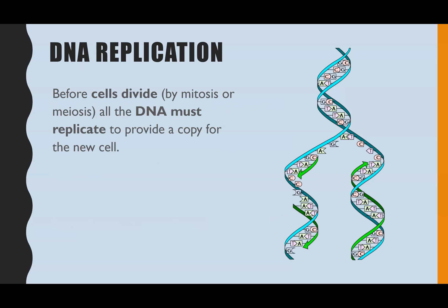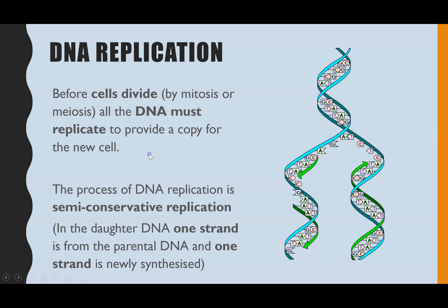DNA replication occurs within the cell cycle before cell division, which would either be mitosis or meiosis. This is happening in interphase of the cell cycle — in particular the S phase, the synthesis phase. It has to happen because DNA needs to replicate so that the new cell that is created also has a full copy of the DNA.